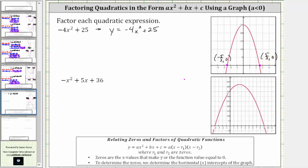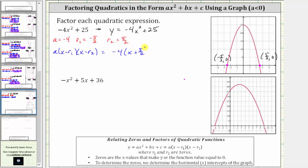So now we know that a, the coefficient of x squared, is negative four. Let's let r sub one equal negative five halves, and r sub two equal five halves. This means the expression in the form a times the quantity x minus r sub one times the quantity x minus r sub two would be negative four times the quantity x minus negative five halves, which simplifies to x plus five halves, and then times the quantity x minus five halves.